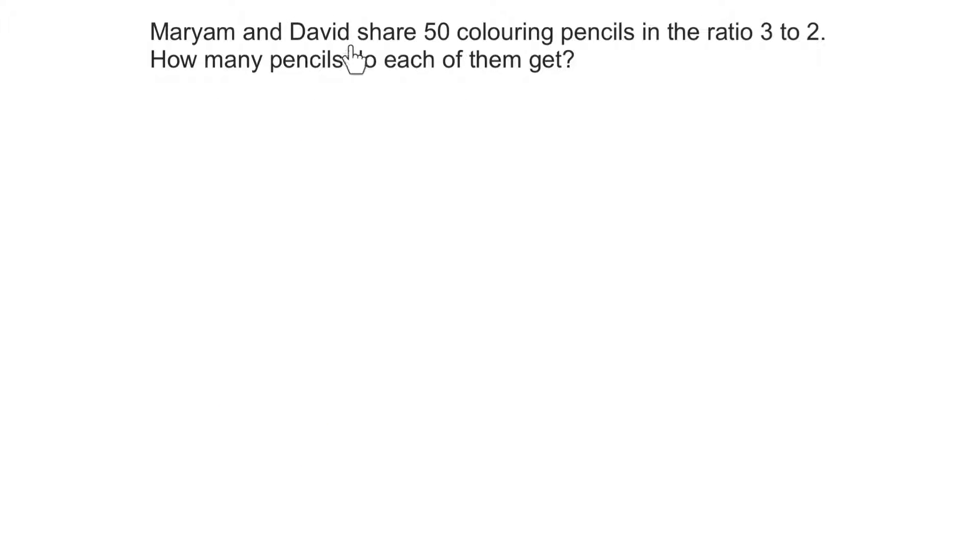Mariam and David share 50 colouring pencils in the ratio 3 to 2. How many pencils do each of them get? Well, if we write M for Mariam and D for David, their ratios are 3 to 2, respectively. So 3 is for Mariam and 2 is for David.